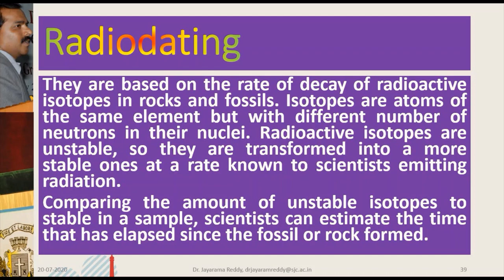Radio dating is the most reliable method of determining the age of the fossil. As you know, radioactive substances like uranium and thorium undergo decay — their concentration will decrease with age. The comparative amount of the stable compound and unstable compound is estimated, and by calculating this ratio the age of the fossil is determined.